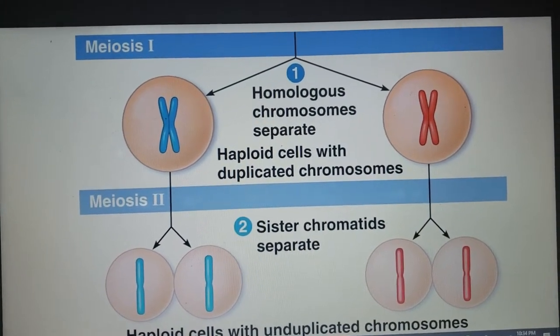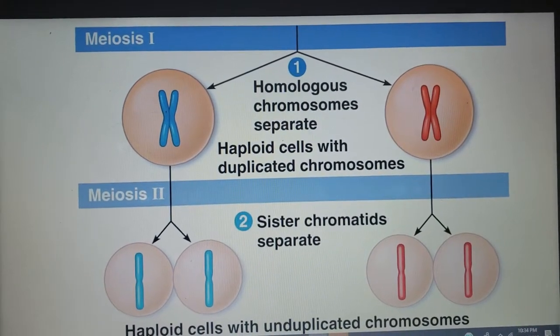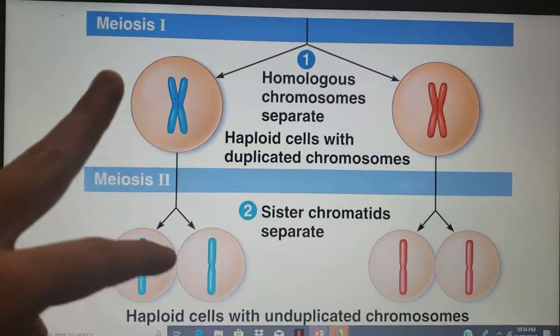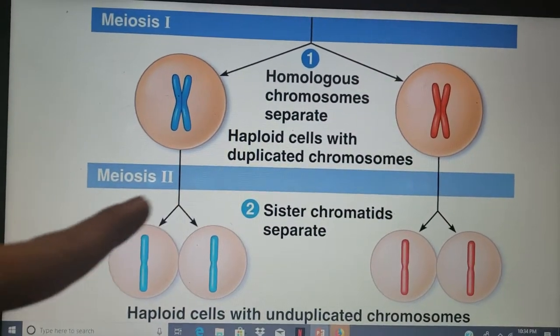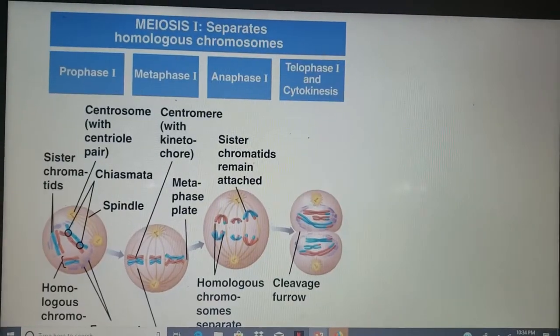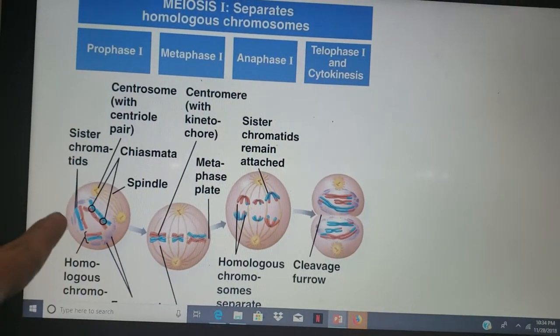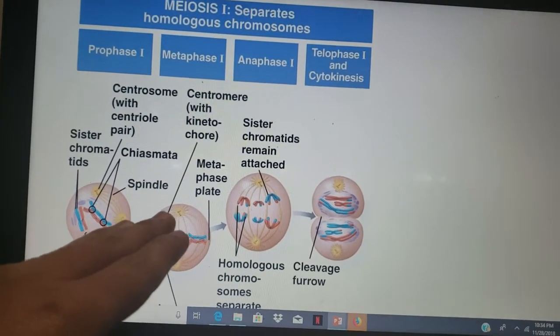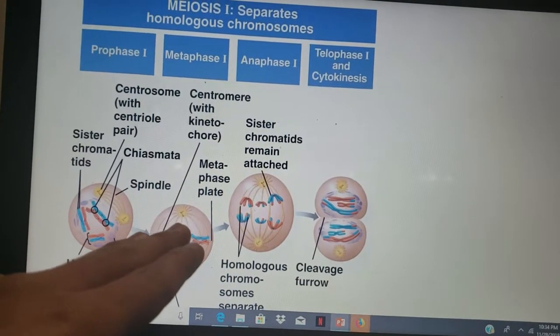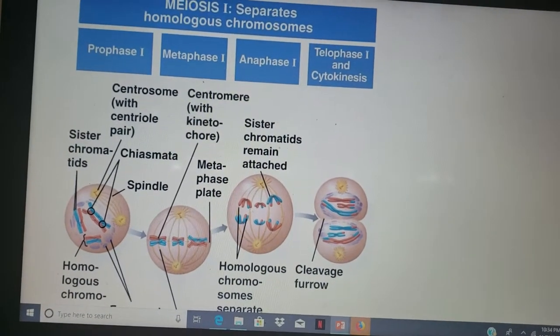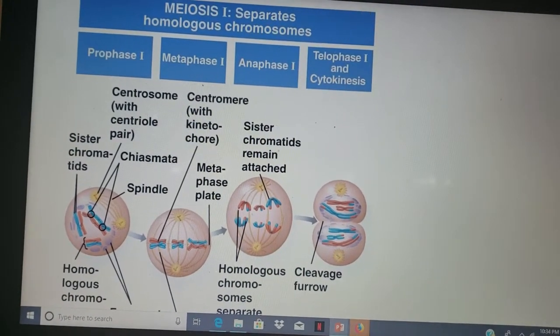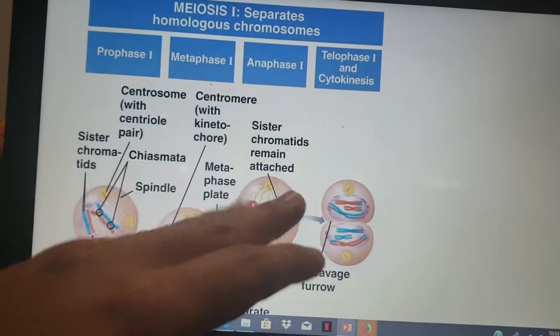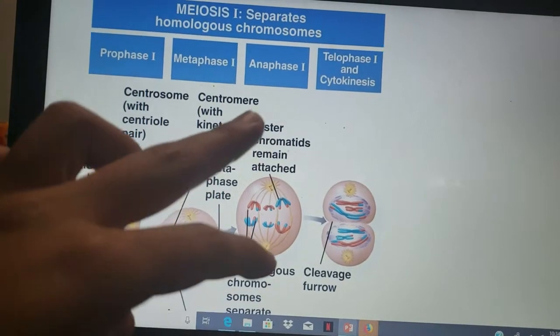We have two rounds: meiosis I and meiosis II. In meiosis I, we have homologous chromosomes together. In prophase I, we have the crossover of homologous chromosomes and they gather at synapses. They move towards the middle, then separate, and we have these two cells.